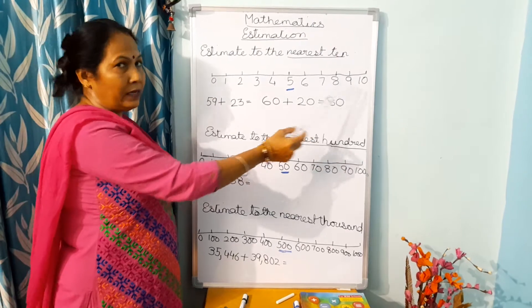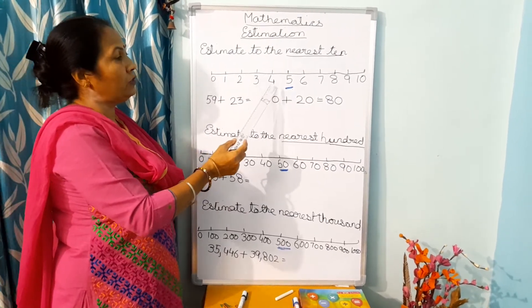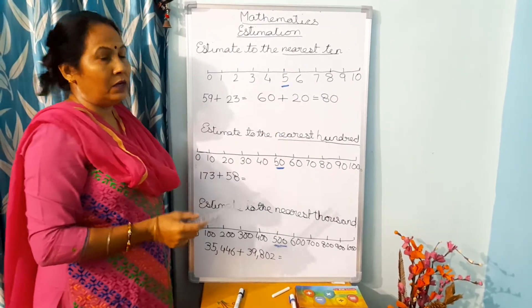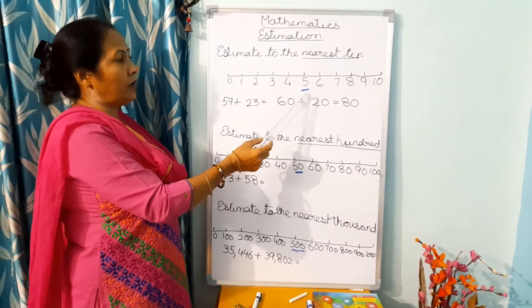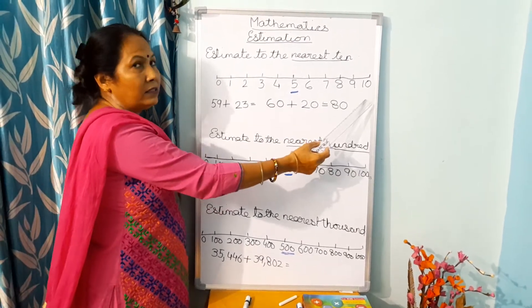Now I have drawn a 9 here: 0, 1, 2, 3, 4, 5, 6, 7, 8, 9, 10. Now children, you will see that 5 is in the middle of 0 and 10.